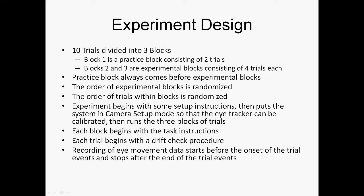The 10 trials of the experiment will be divided into 3 blocks. Block 1 will be a practice block consisting of 2 trials. Blocks 2 and 3 will be experimental blocks consisting of 4 trials each. The practice block will always come before the experimental blocks. The order of the experimental blocks will be randomized, and the order of the trials within each block will also be randomized.